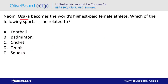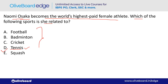Naomi Osaka became the world's highest-paid female athlete. Which sport is she associated with? She is associated with tennis — option D. She is from Japan.